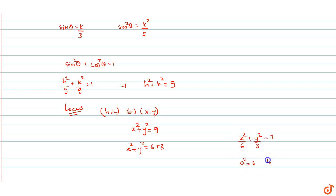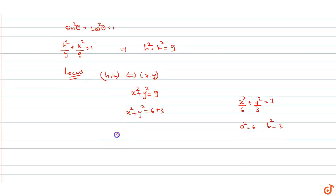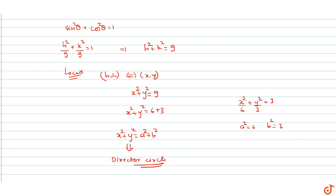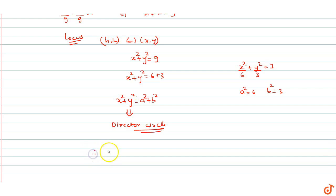So a² = 6 and b² = 3. We get x² + y² = a² + b², which is the equation of the director circle. We know that if the angle between tangents is 90°, the point lies on the director circle. Therefore, the angle between the tangents at P and Q is 90°. Hence proved.